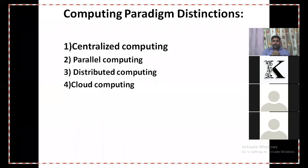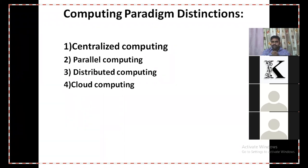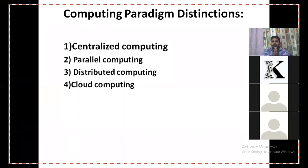The next topic is computing paradigms distinctions. As time went on, different computing paradigms came into picture. The first one is centralized computing. The next is parallel computing. The third is distributed computing. The fourth is cloud computing. In the golden days we used centralized computing. Next we went for parallel computing — two or more processors running concurrently. Next is distributed computing to increase performance, like high throughput. The last one is cloud computing. We are going to discuss all four of these in the coming slides.